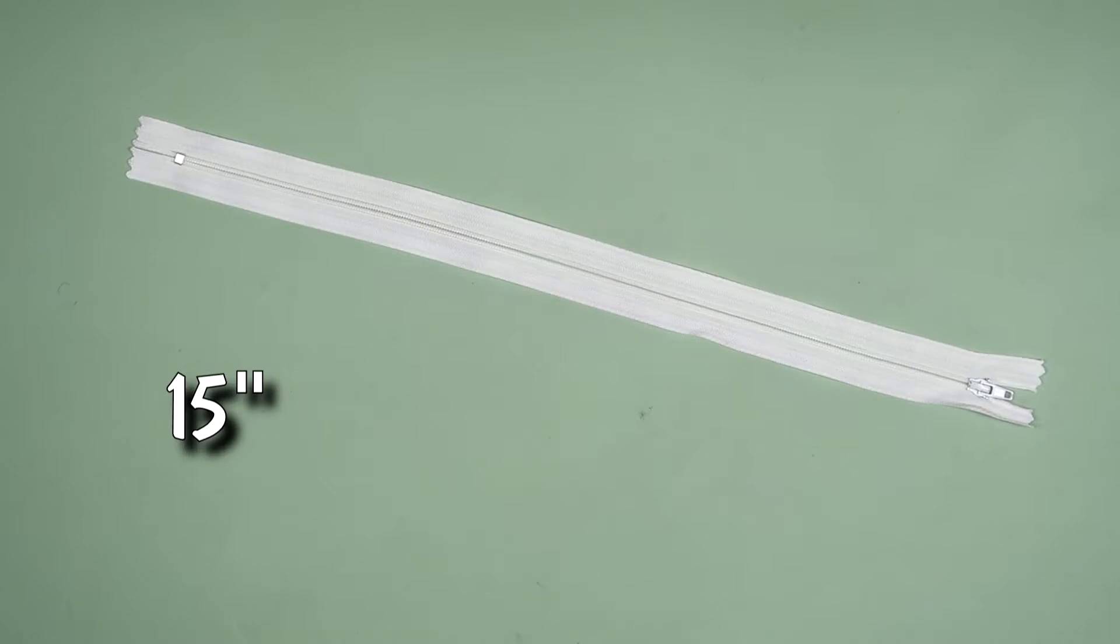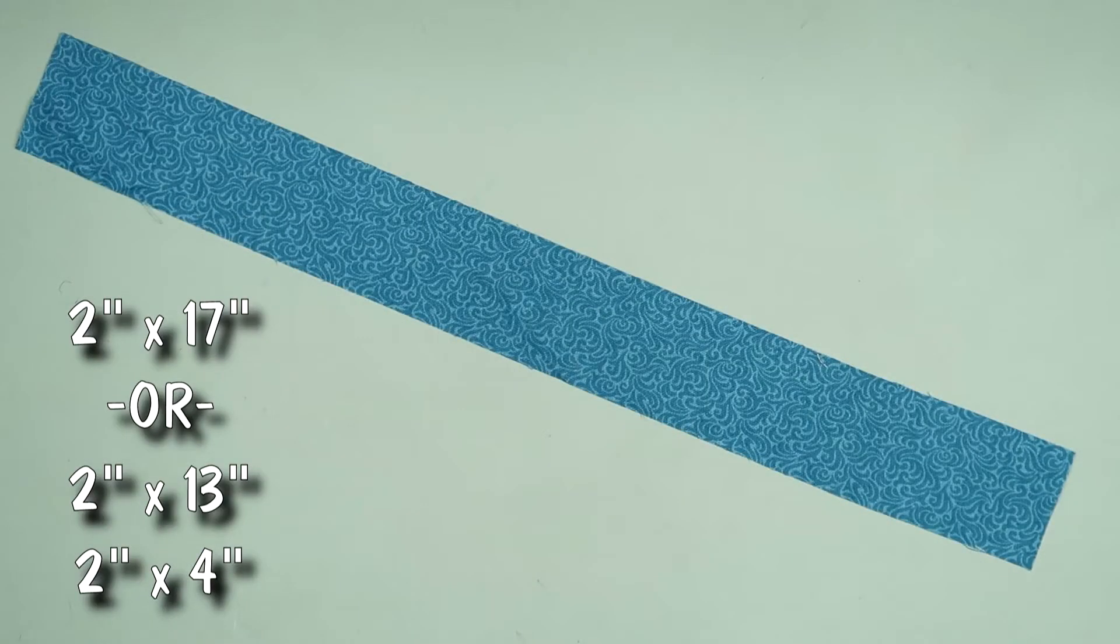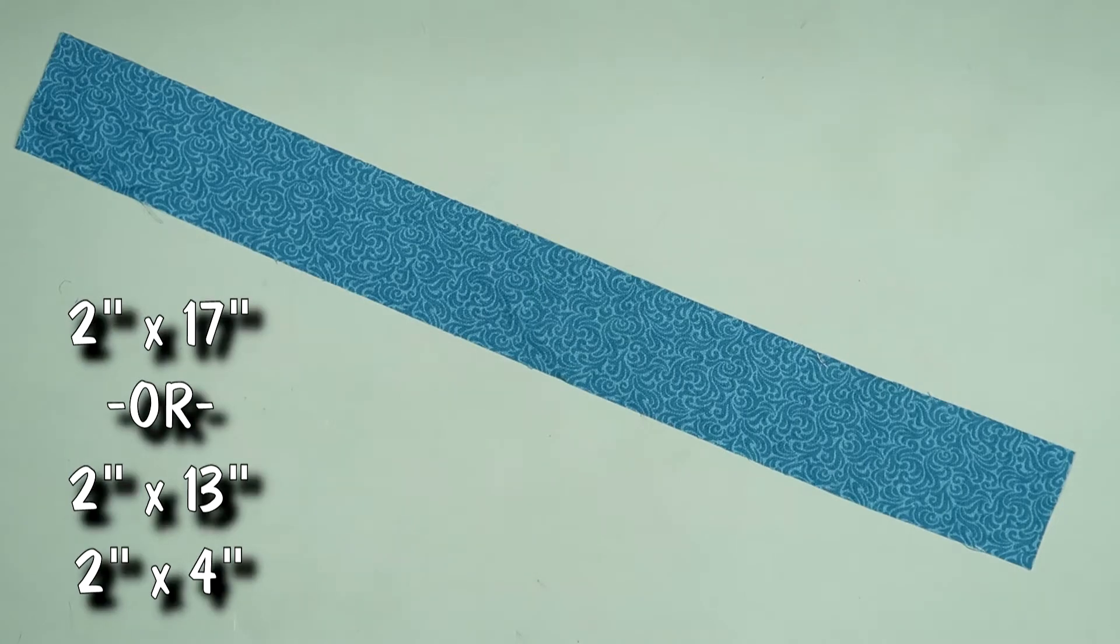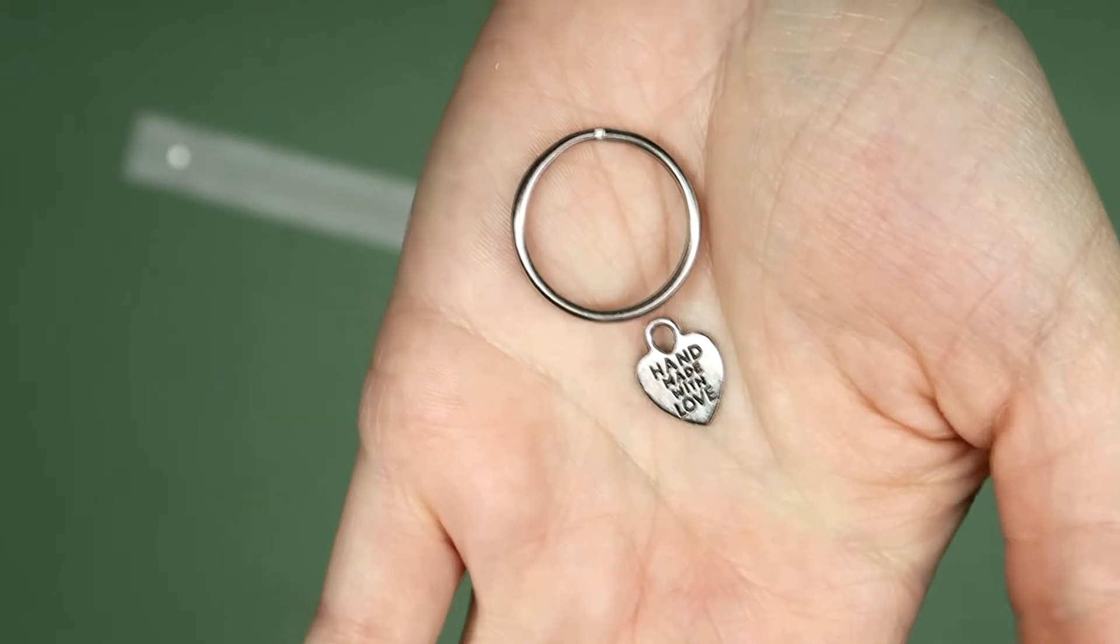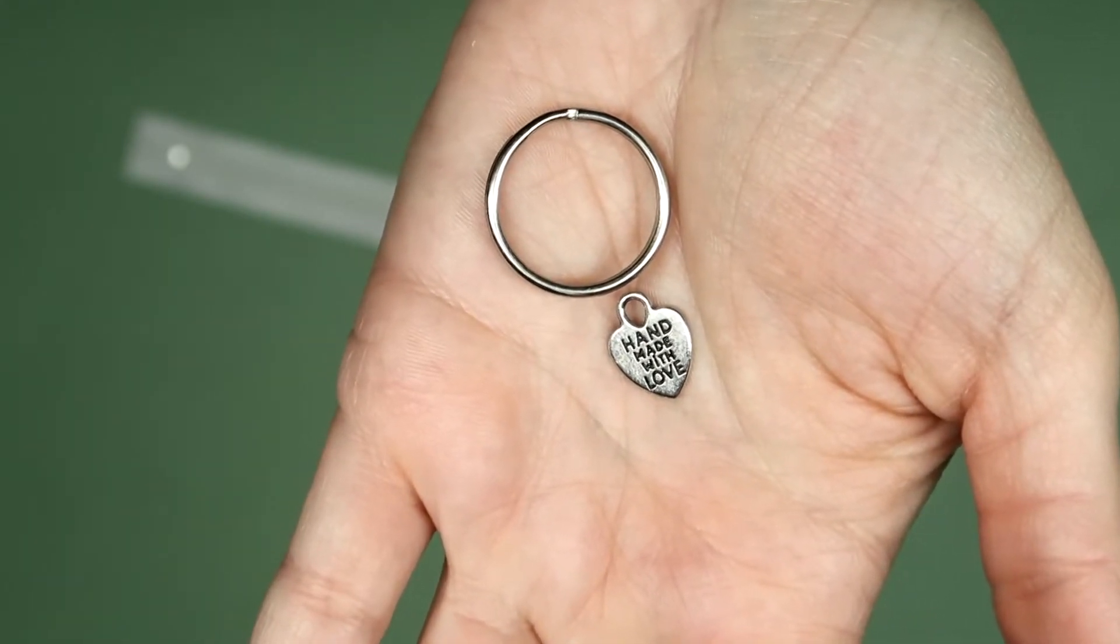You'll need a zipper that is longer than the width of your bag, coordinating fabric for the strap. There are a few different ways you can make the strap depending on what you want your bag to look like. We'll get into that later and if you want to make the strap that I'm making you will need a split ring and a cute charm.